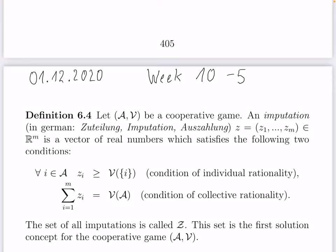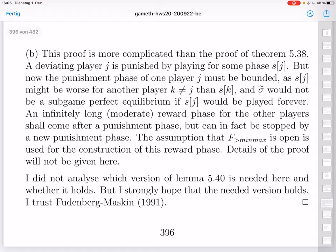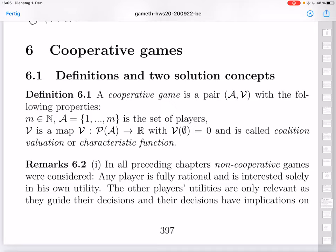Welcome to the course on Game Theory in the Autumn Term 2020 at the University of Mannheim. This is the fifth video of week 10. In the last video we saw the definition of a cooperative game. It is a rather sparse object: a finite set of players, script A, players 1 to M, and a map V from the power set of A to the real numbers, giving any subset of A a real number. These subsets are called coalitions, the numbers are their values, and V is called the coalition valuation or characteristic function. This is a simple definition, but the theory around it is interesting and has many applications.